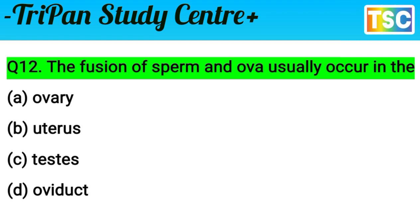Let's see the next question on your screen. Question: The fusion of sperm and ova usually occurs in — A) Ovary, B) Uterus, C) Testes, D) Oviduct. This question is most important and the answer is important for the exam and competitive exam point of view. First, give a correct answer and write it in your notebook.